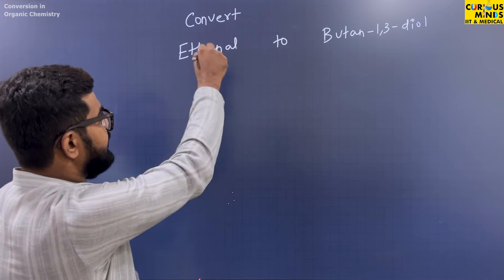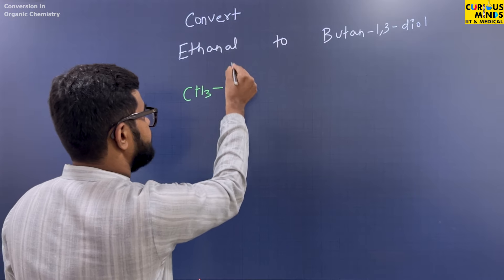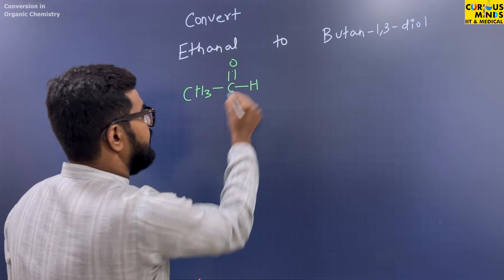First of all, I will make ethanol. So the ethanol structure is like this: CH3-CH=O. We call this acetaldehyde.